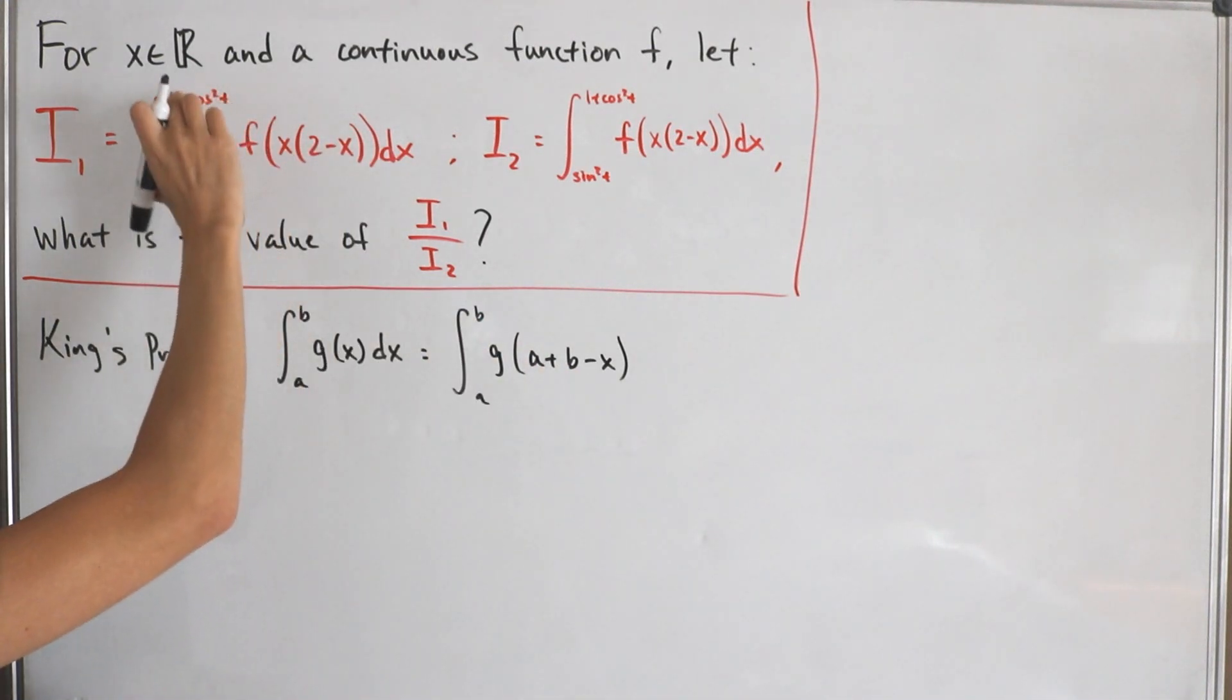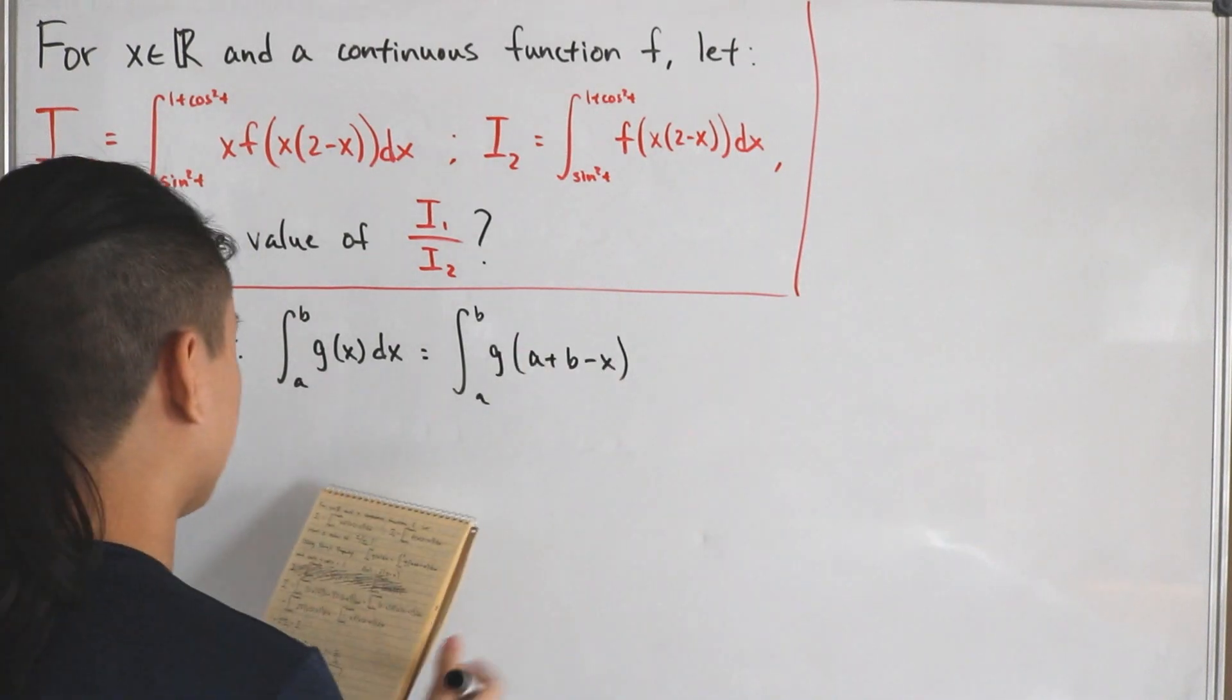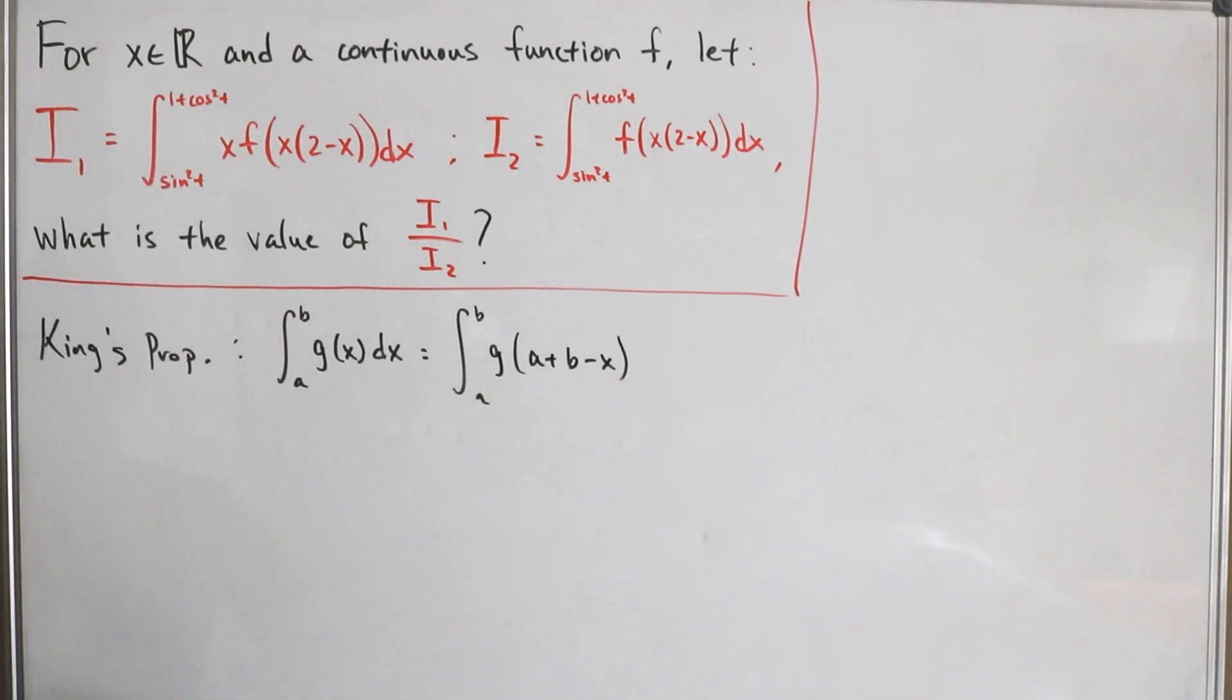So again, a plus b is from our bounds, and you can see why I mentioned that we'll be using the fundamental theorem of trigonometry. When we add those bounds, obviously sine squared t plus cosine squared t is indeed just equal to one as the unit circle.